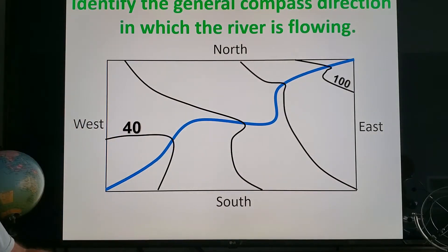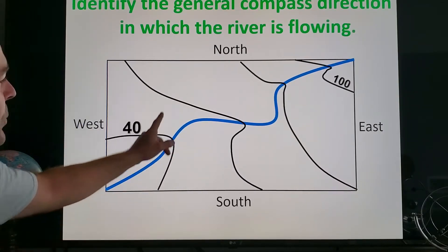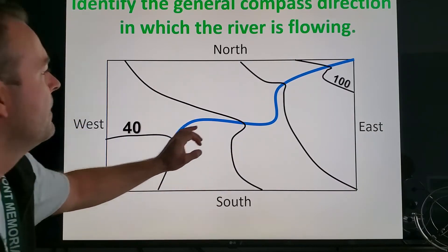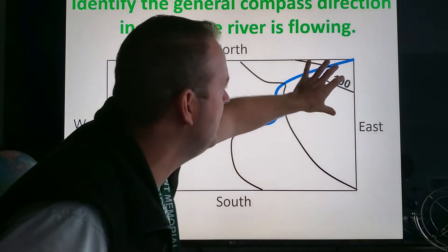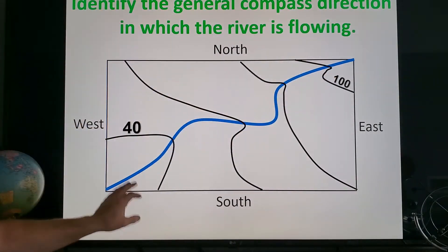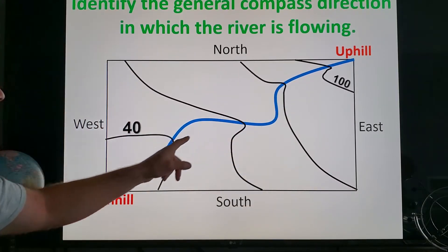Identify the general compass direction in which this river is flowing. Well you tell me—it looks like the contour lines are bending this way, looks like there are higher numbers over here, so it must be going that way from uphill to downhill. In this case of course that is toward the southwest.